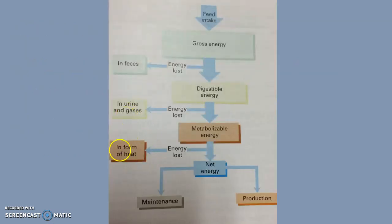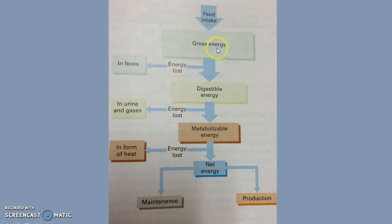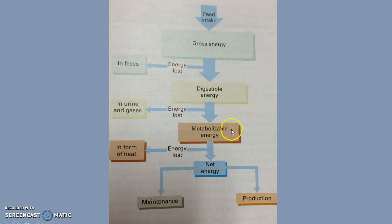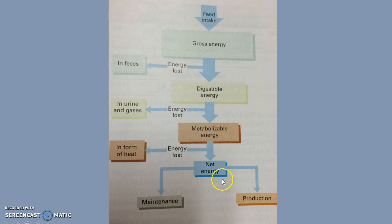This figure from your book is a visual of the energy system. We look at feed intake, which provides a gross energy amount. The first step is going from gross energy to digestible energy — that's the energy lost in feces. Next is from digestible down to metabolizable energy — that's the energy lost in urine and gases. The last step is from metabolizable energy down to net energy, which accounts for the energy lost in the form of heat, or producing body heat for the animal.